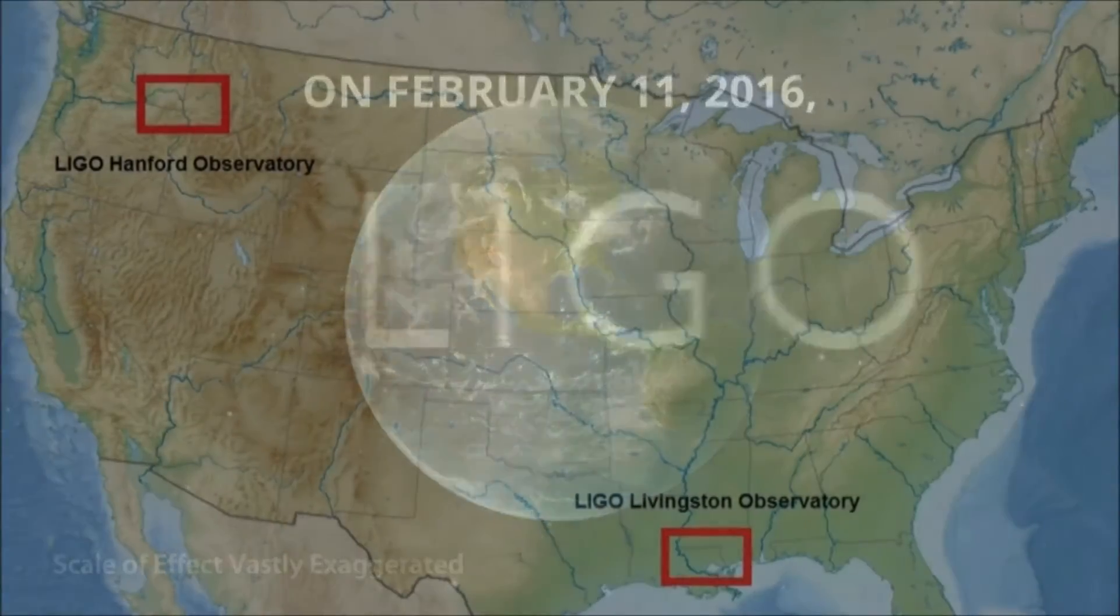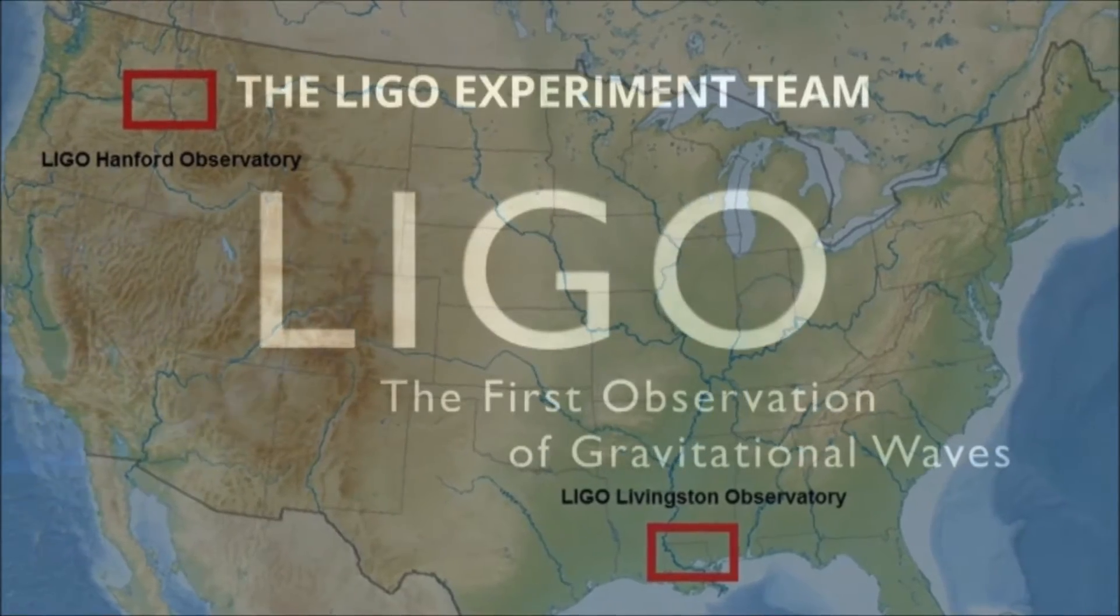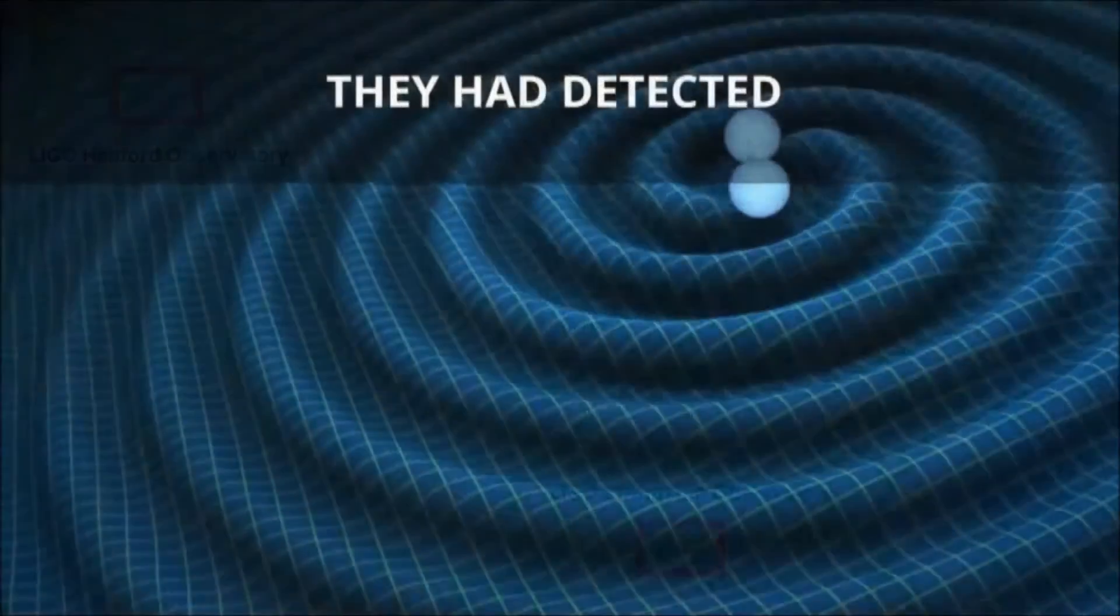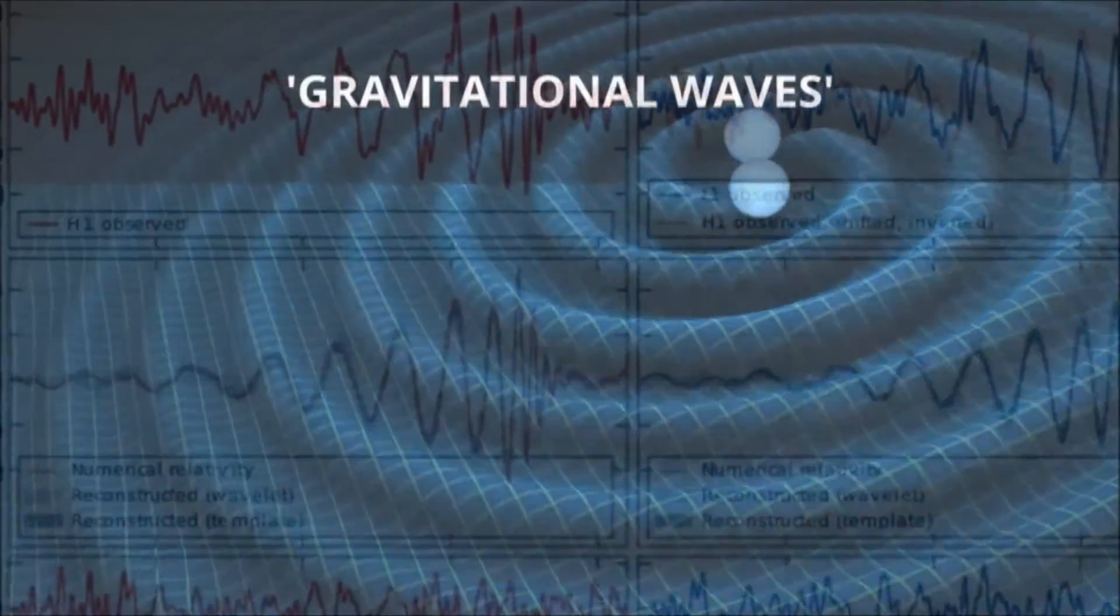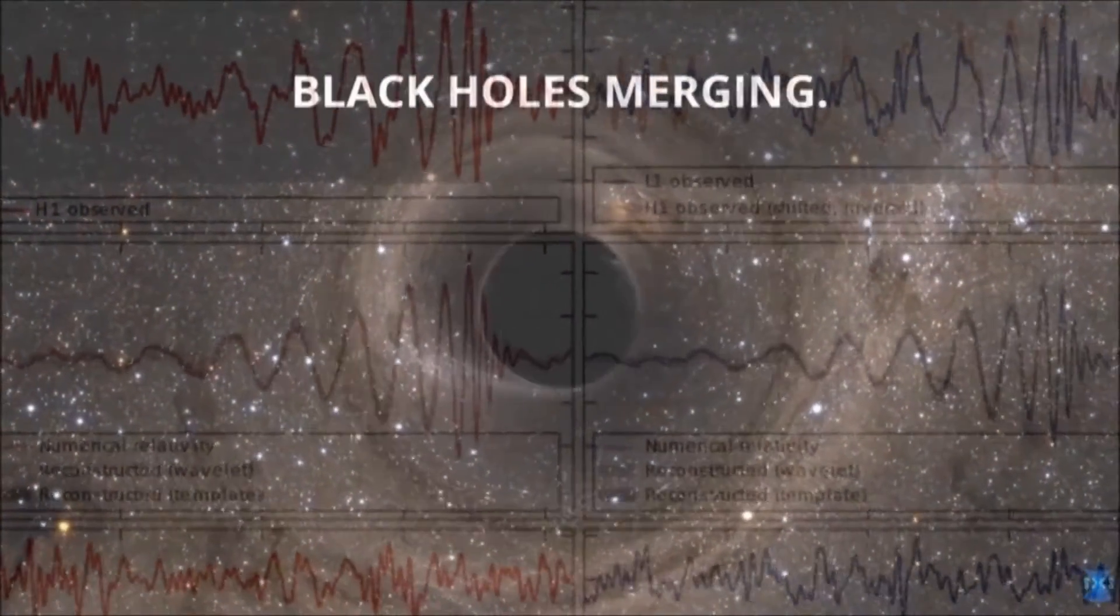On February 11, 2016, the LIGO experiment team announced that they had detected gravitational waves from a pair of black holes merging.